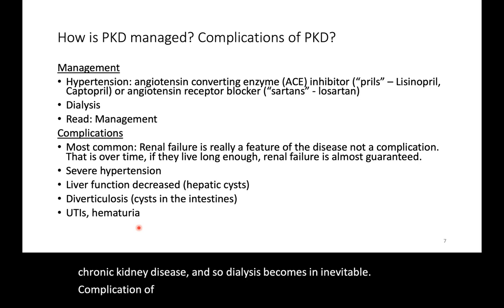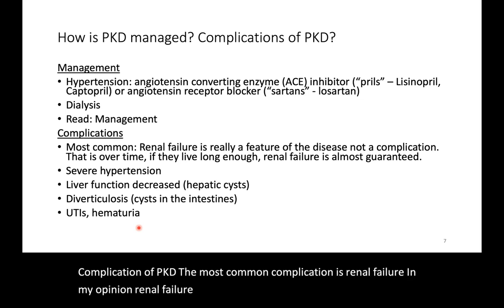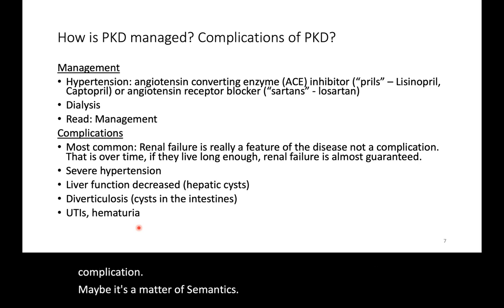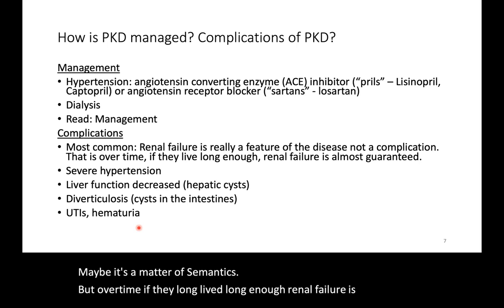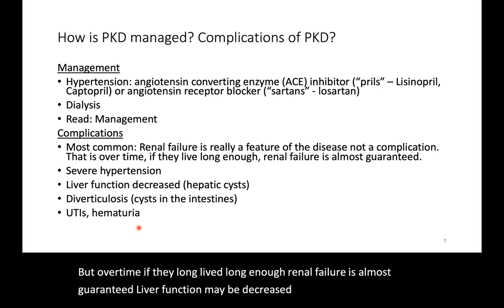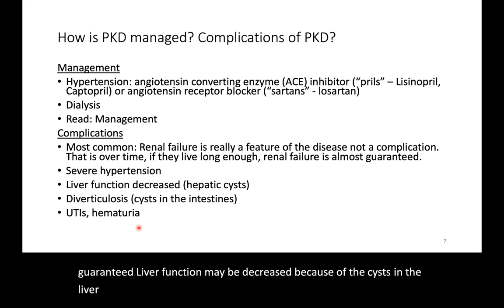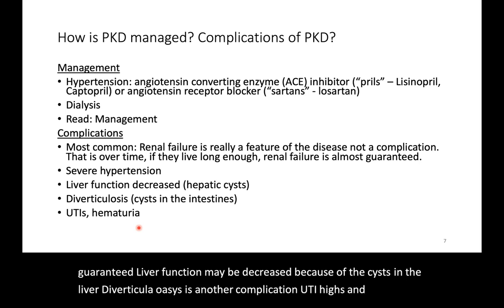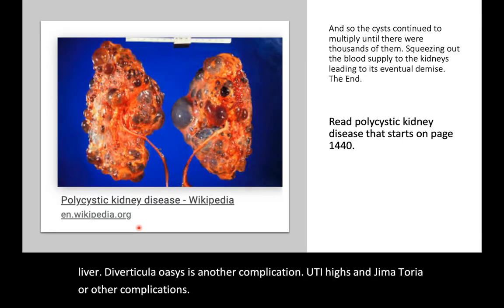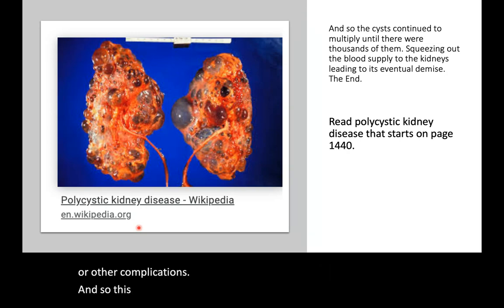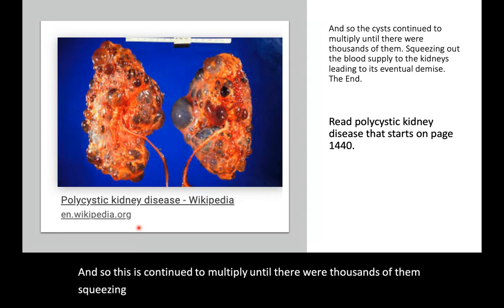The most common complication is renal failure. In the instructor's opinion, renal failure is really a feature of the disease rather than a complication — over time, if patients live long enough, renal failure is almost guaranteed. Liver function may be decreased because of cysts in the liver. Diverticulosis is another complication. UTIs and hematuria are also complications. The cysts continue to multiply until there are thousands of them squeezing out the blood supply to the kidneys, leading to eventual renal demise.